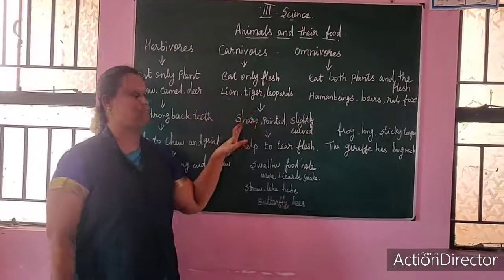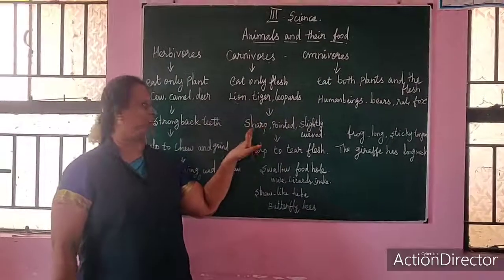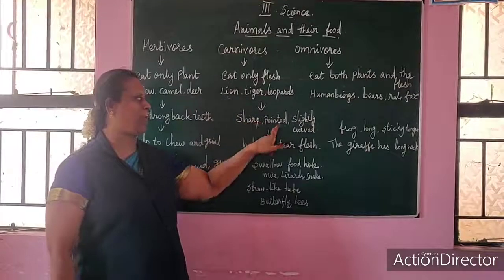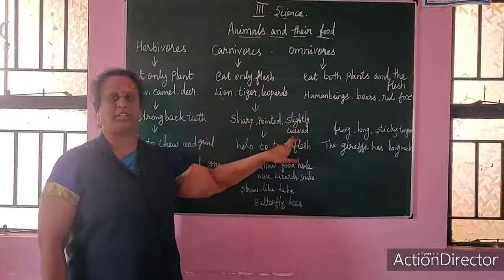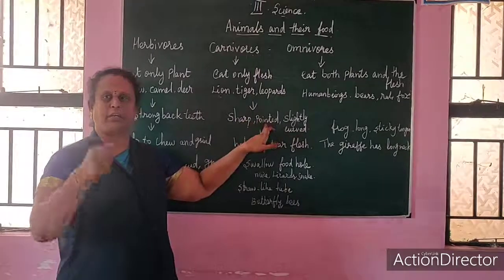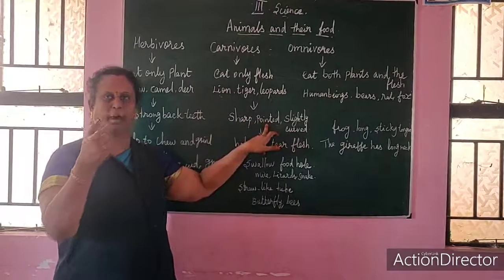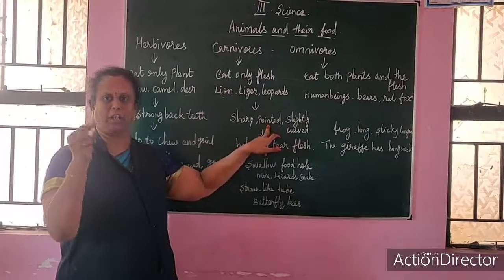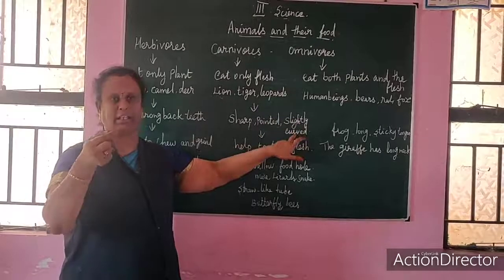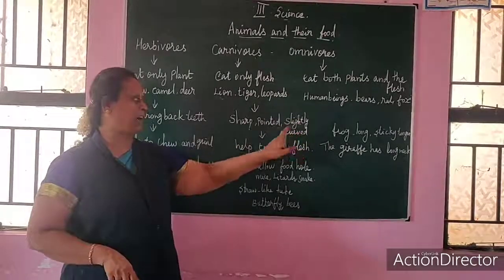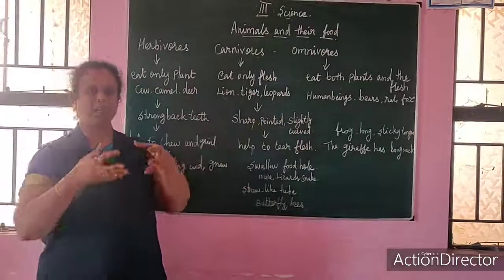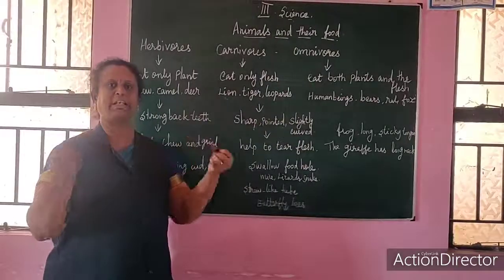Carnivore animals have sharp, pointed, and slightly curved teeth. Because they are sharp and pointed, they are used to tear the flesh of other animals.